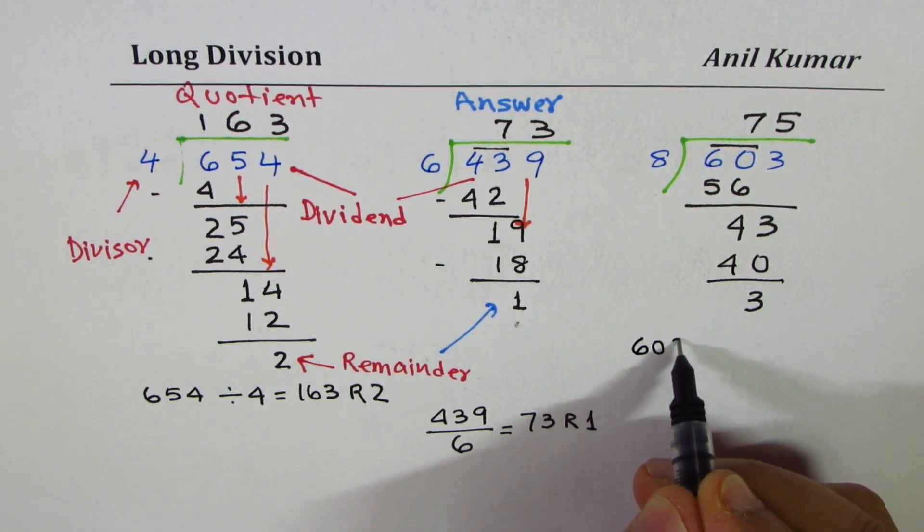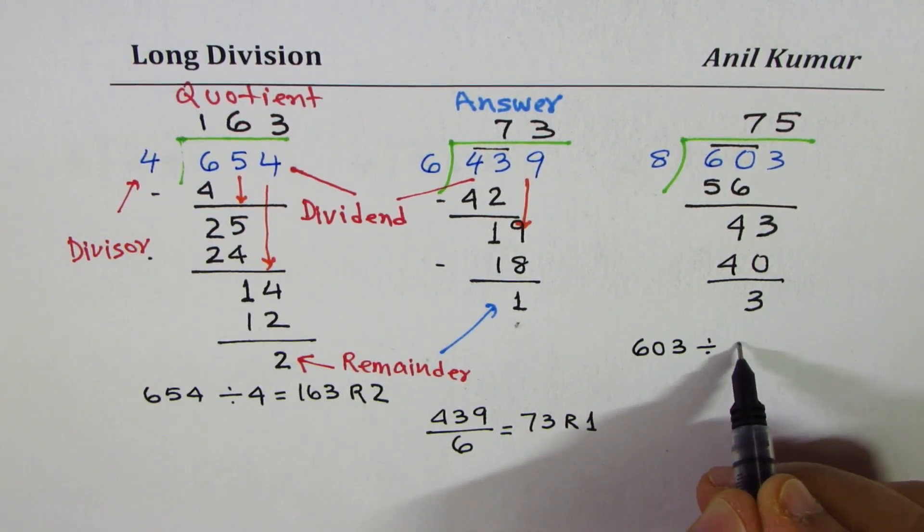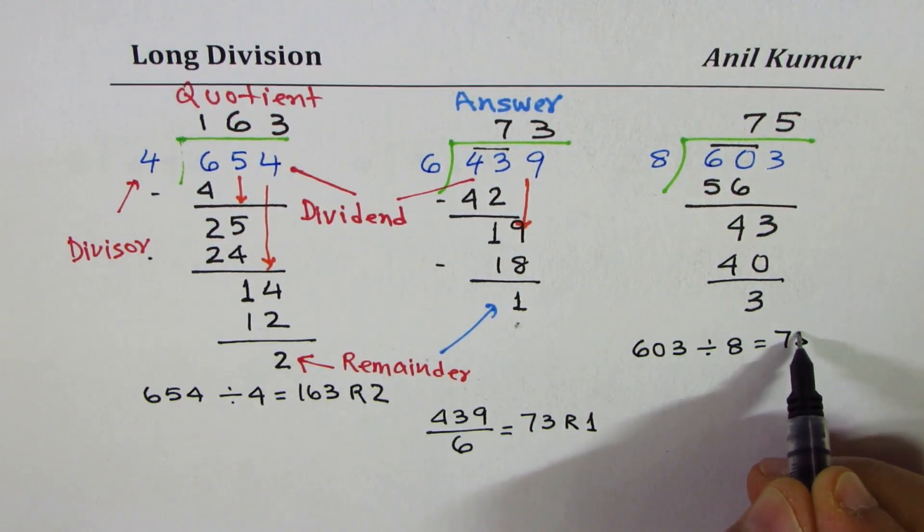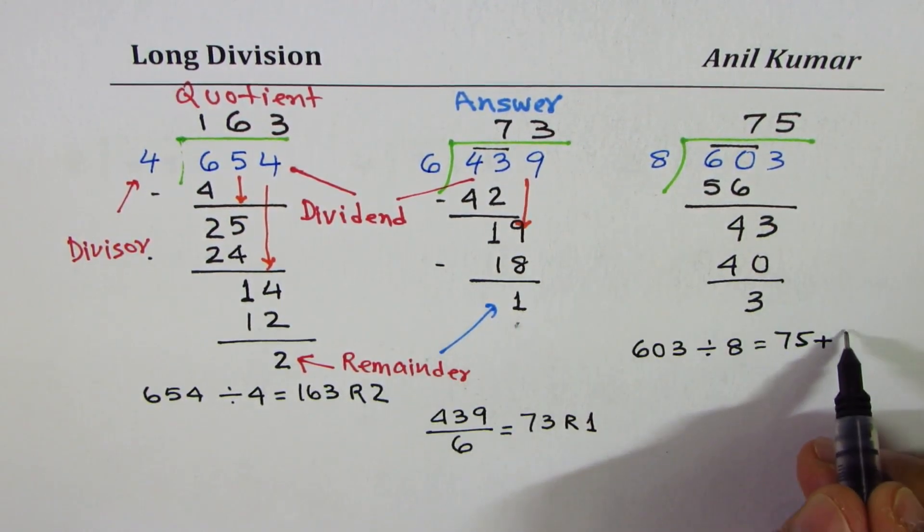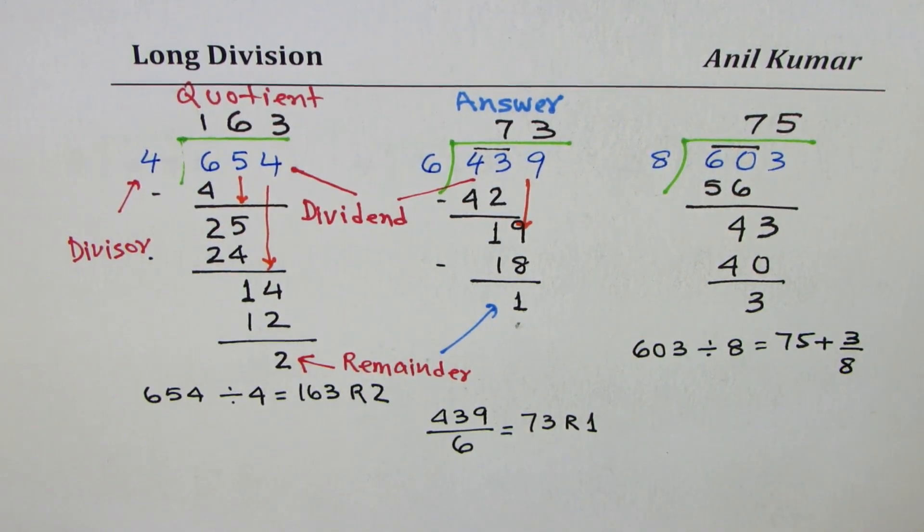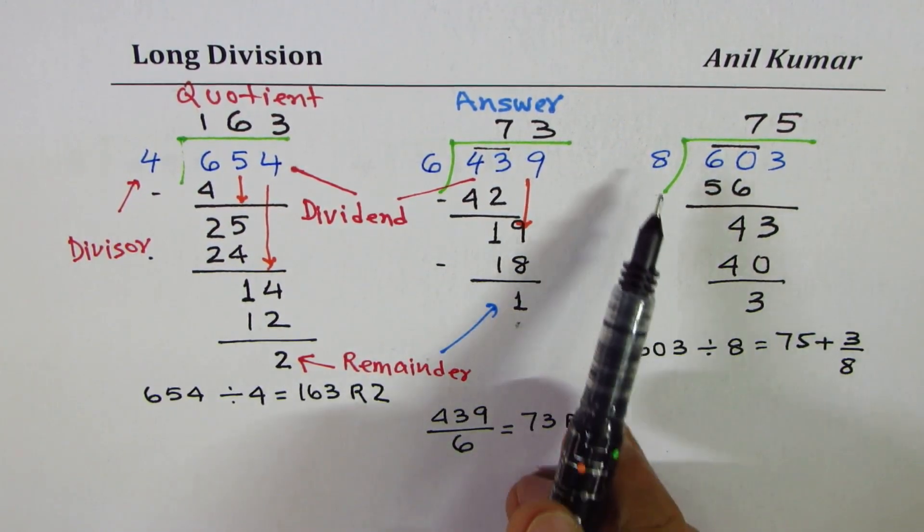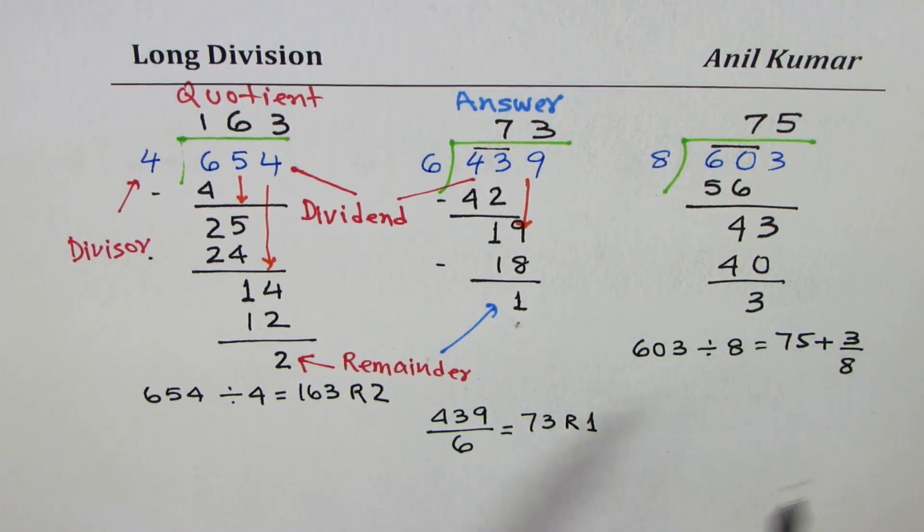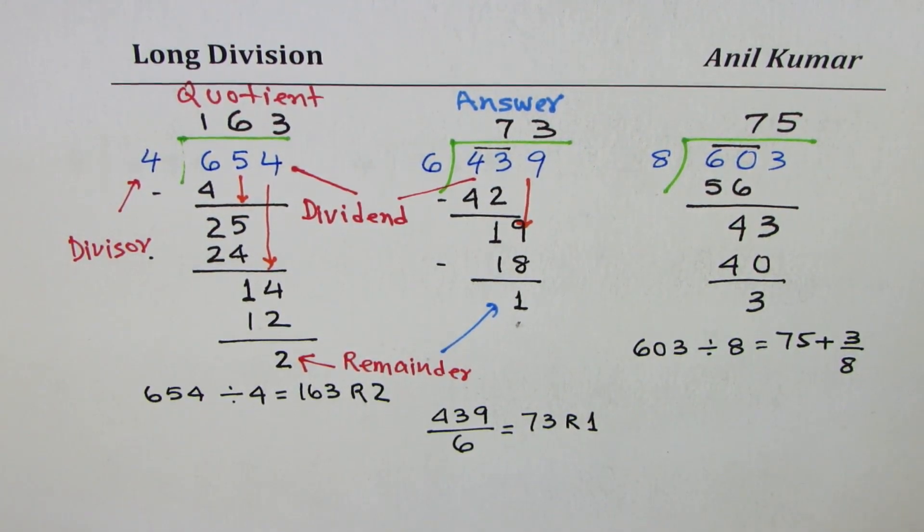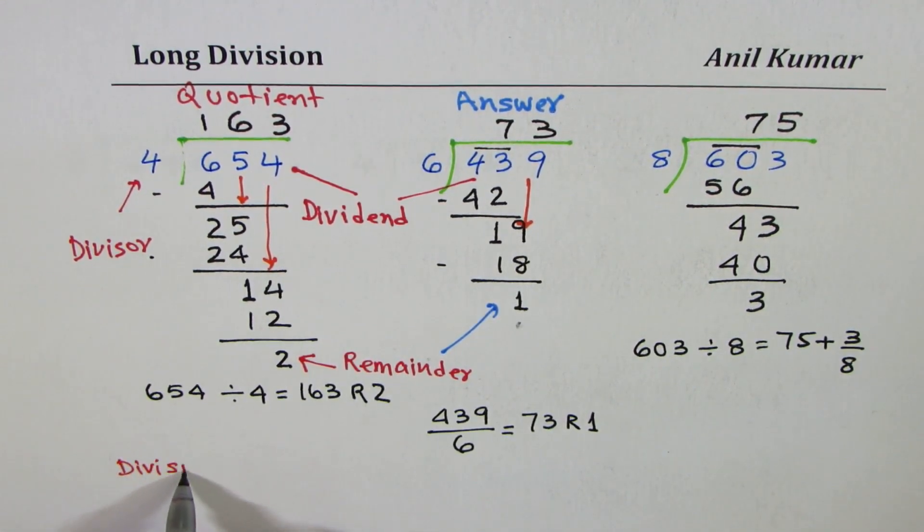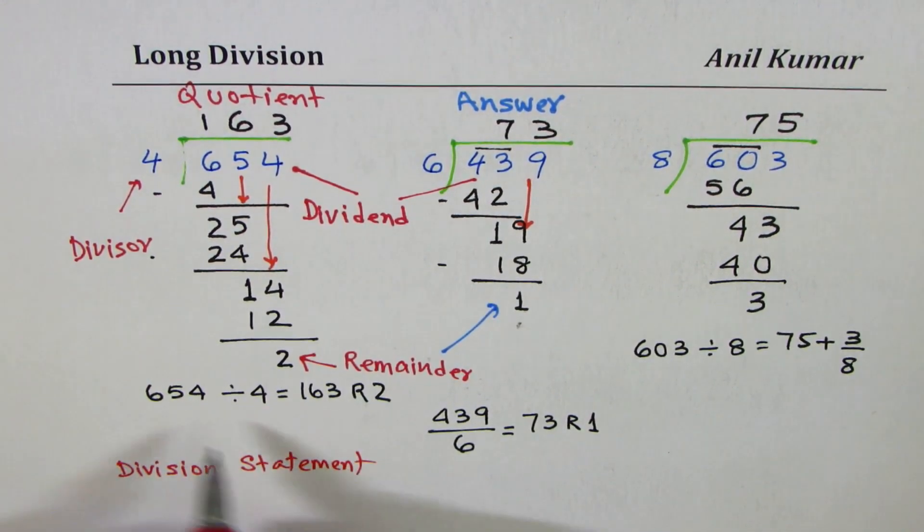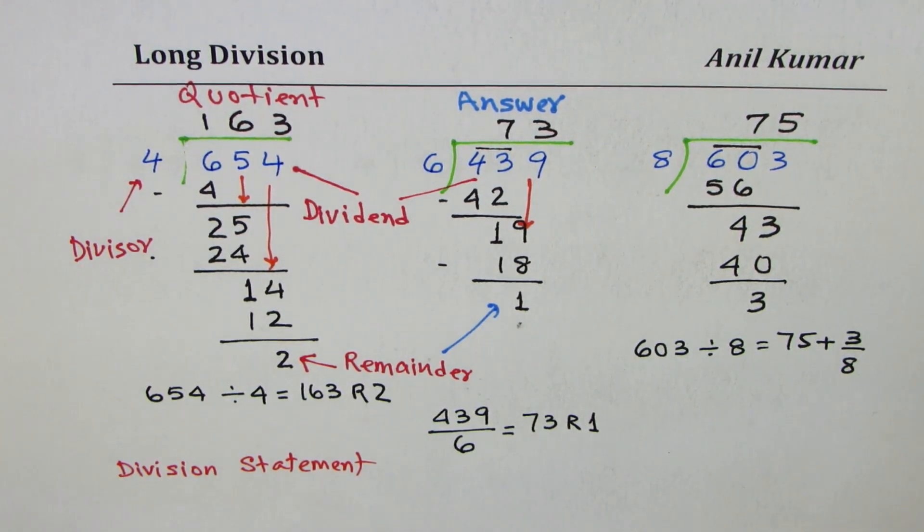We could write this as 603 divided by 8 is equal to 75 plus 3 over 8. That's another way you could write the same thing. 3 divided by 8 is left as a remainder. These are different ways in which you can write your division statement. Let me introduce here the term division statement.